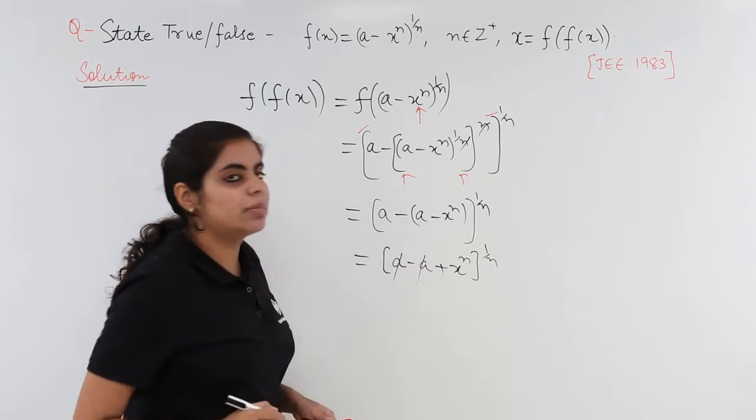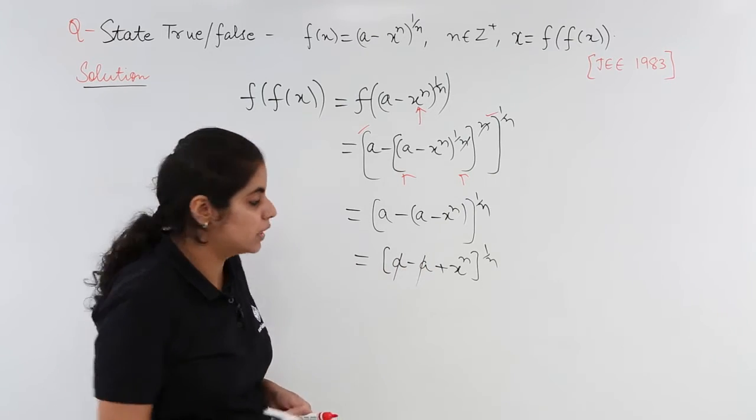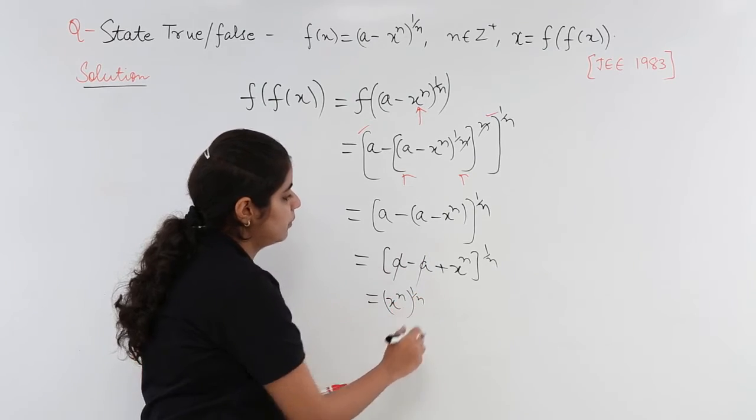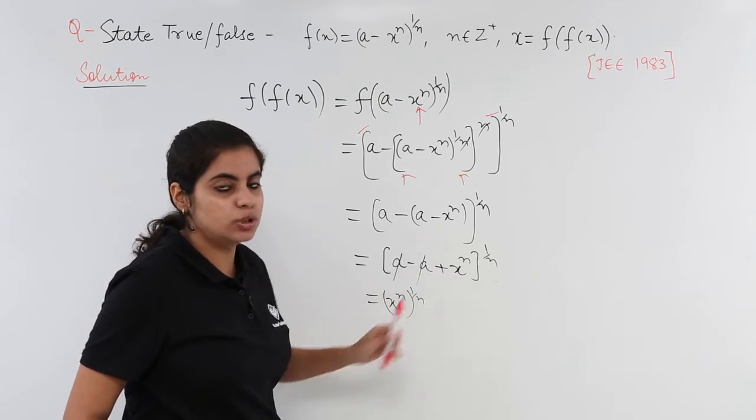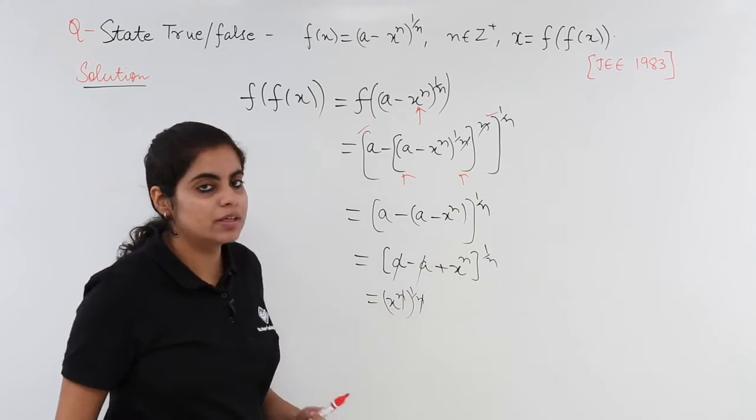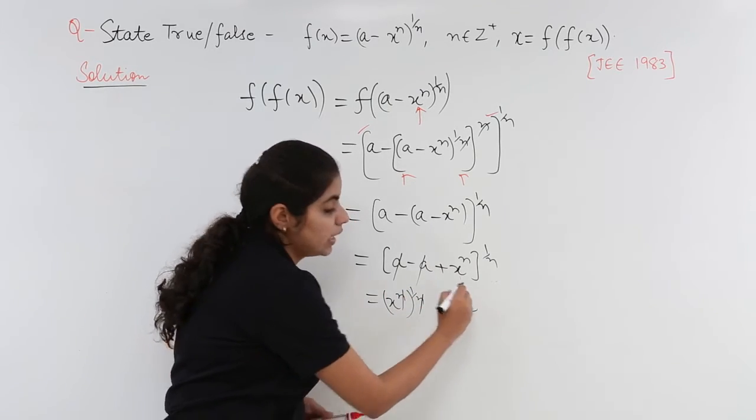Now a cancels with minus a. What are you left with? You are left with (x^n)^(1/n). You see, it's x^n whole power 1/n and the powers get cancelled. What is left? x.